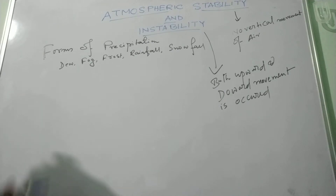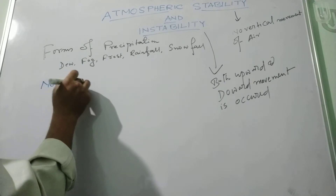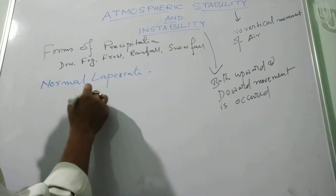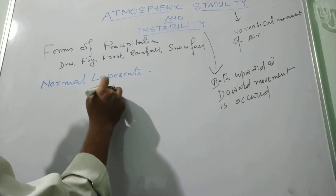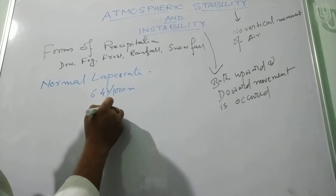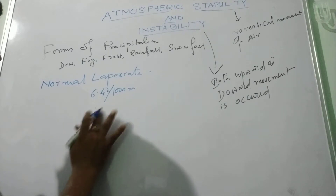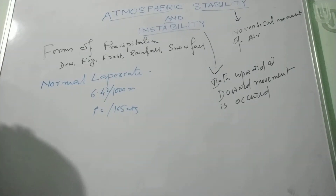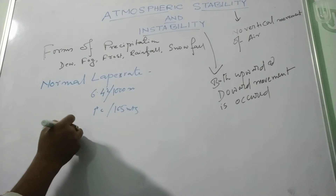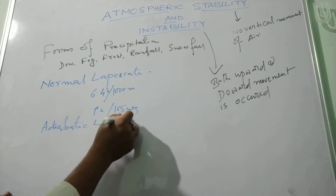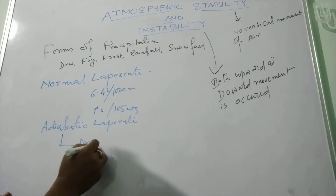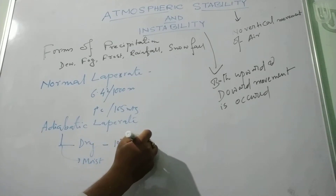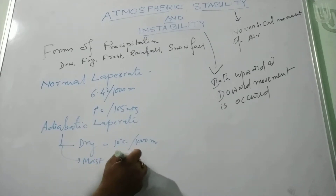So this stability and instability basically depends on two factors. One is the normal lapse rate. The normal lapse rate is the decrease of temperature with increasing height — that is 6.4 degree centigrade per 1000 meters, or 1 degree centigrade per 165 meters. And the adiabatic lapse rate, which may be dry or moist. In case of the dry adiabatic lapse rate there is a variation of 10 degree centigrade per 1000 meters, and in case of the moist it is approximately 4 to 10 degree centigrade per 1000 meters.